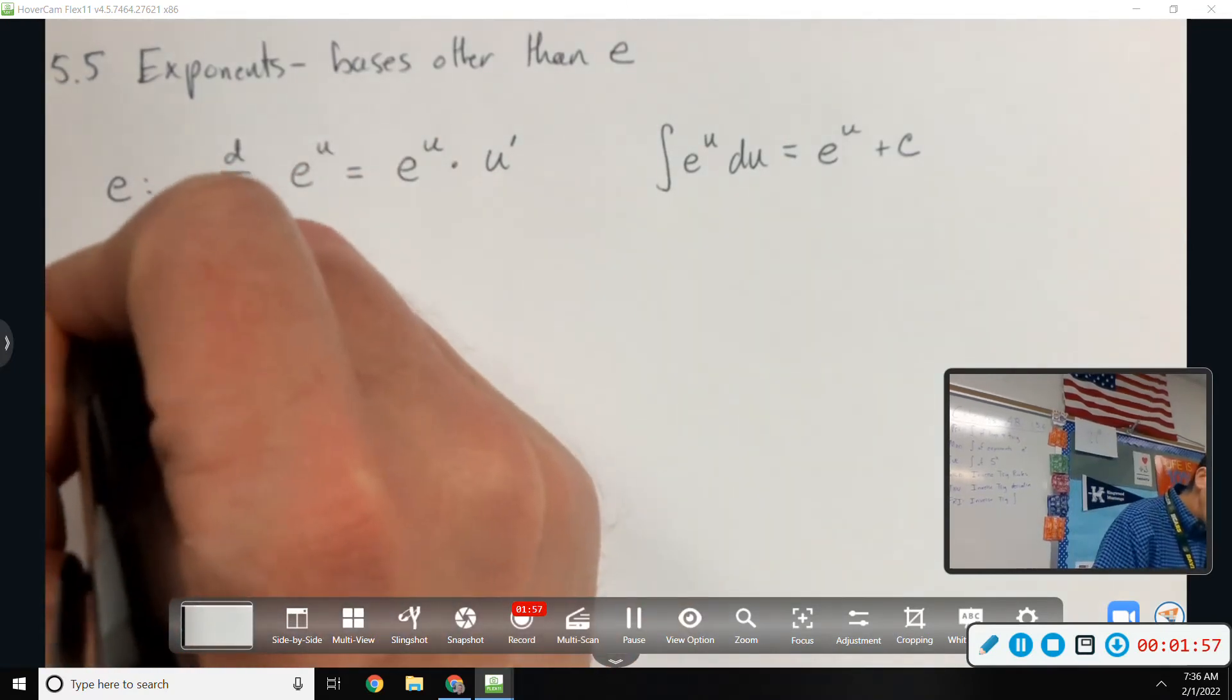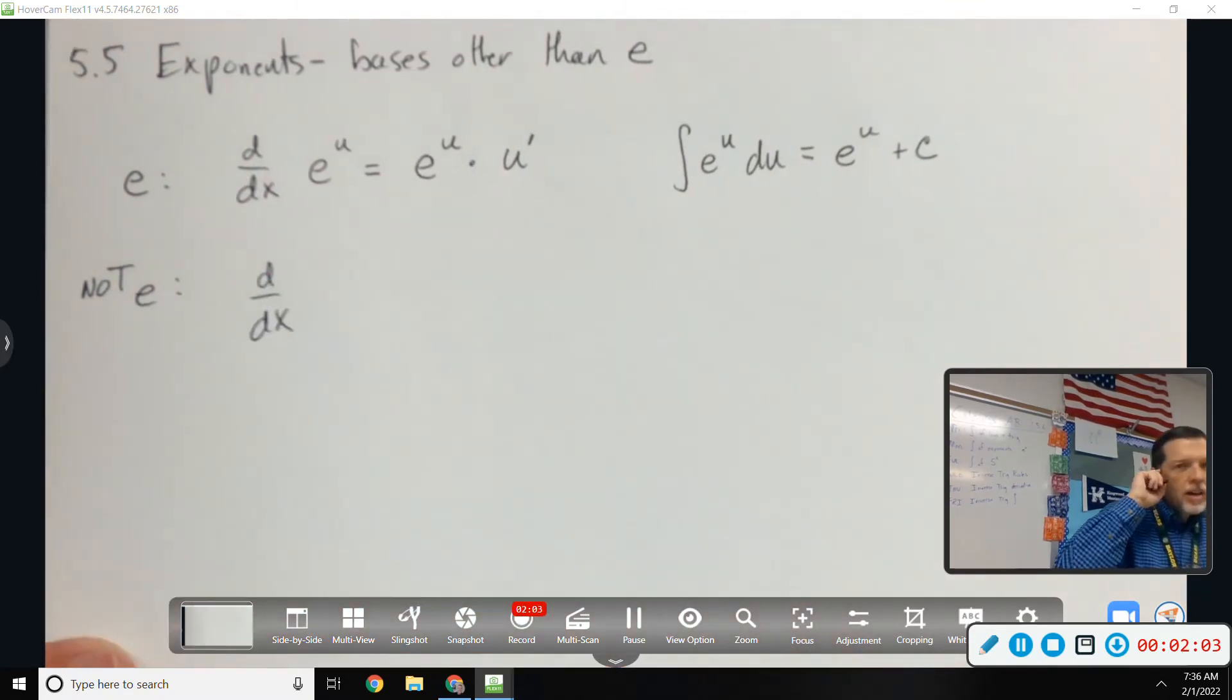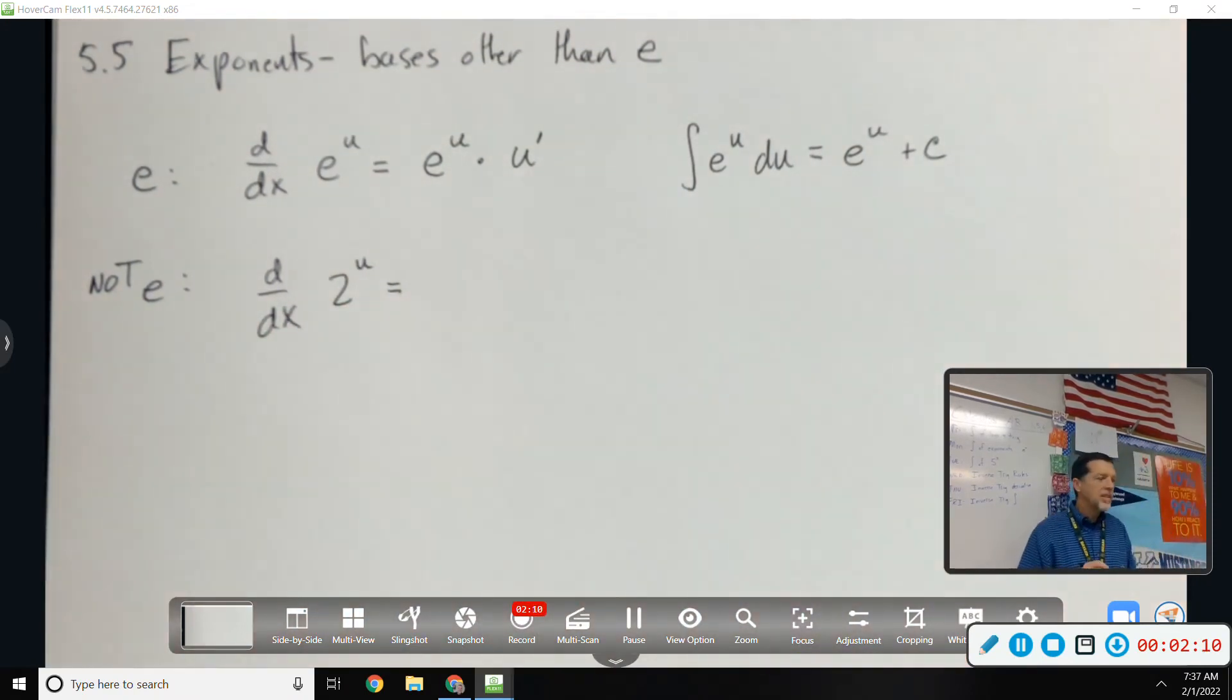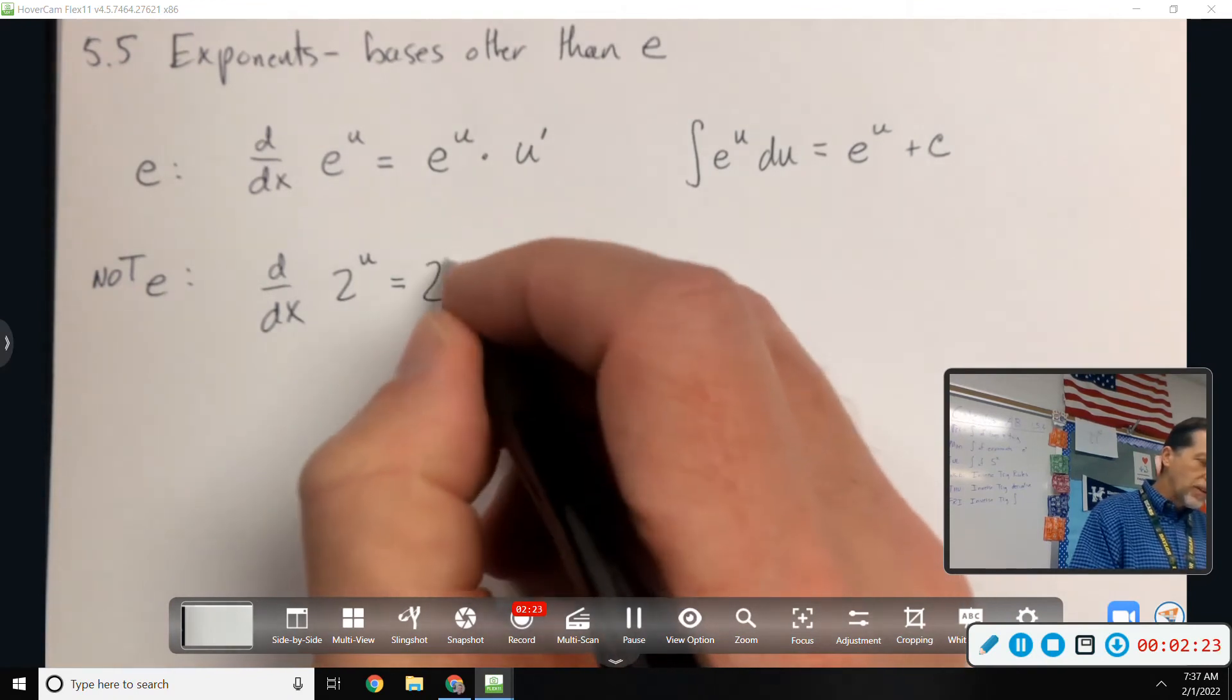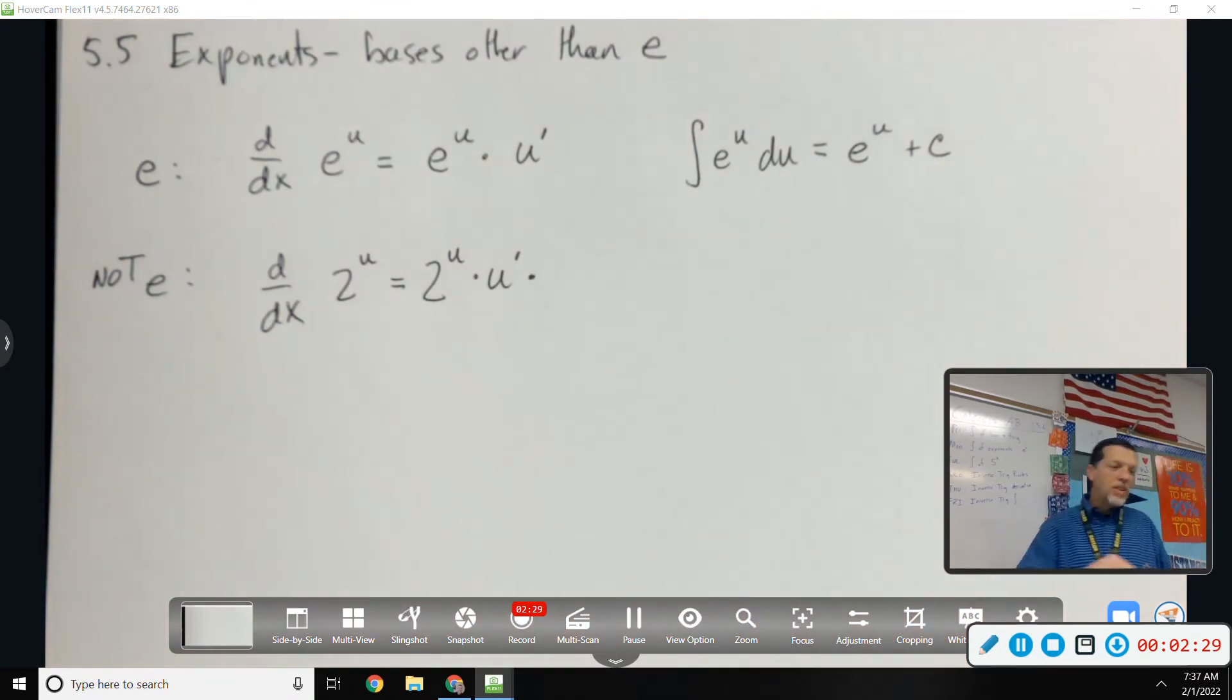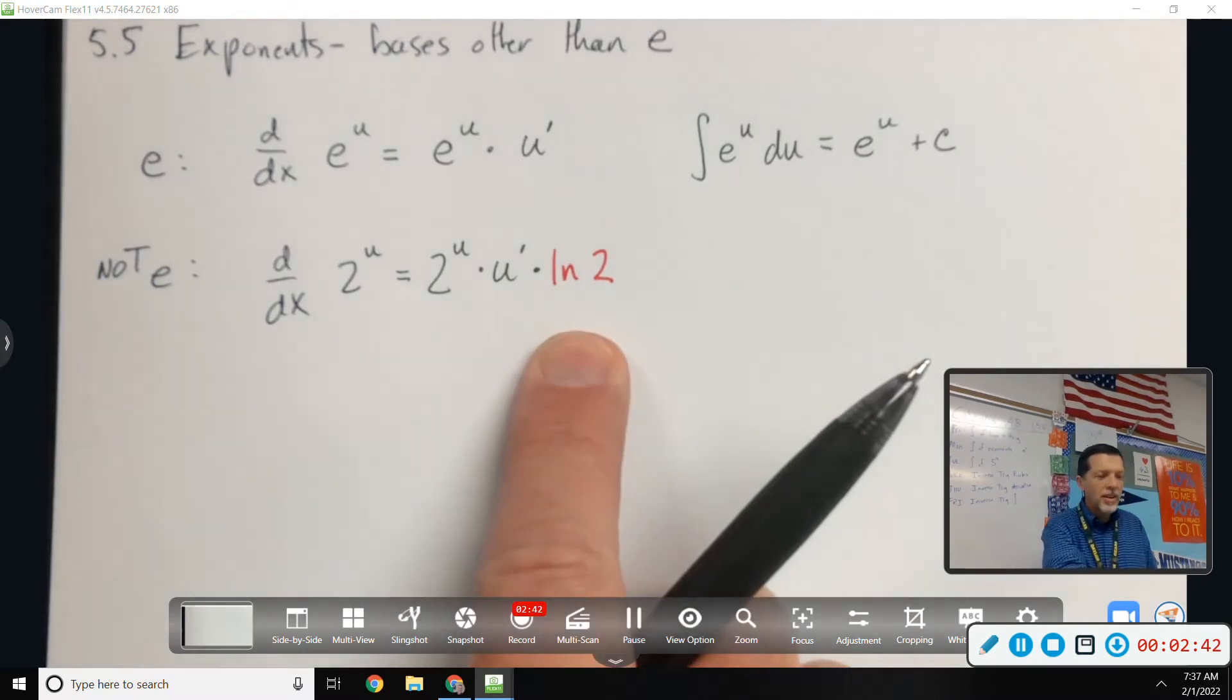That's stuff we already know. We may not know super well, but we know it. What we're going to do today is bases that are not E. So something like 2 to the U. Now, it's very similar, but obviously if it's a different lesson, then something a little bit extra or different is going on. So it follows the same pattern. The derivative will be 2 to the U times U prime. But then the extra piece you multiply by natural log of 2. Natural log of whatever the base is. So that's sort of the new thing today. It works just like E's, except that you multiply by the natural log of whatever the base is.